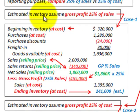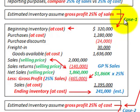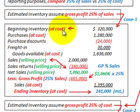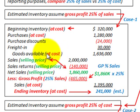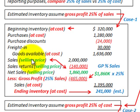For our first case, we're estimating inventory assuming gross profit is 25% of sales. We have a beginning inventory at cost, then purchases for the period, minus purchase discounts, plus freight in. What we come up with is our goods available at cost — that's the cost basis.